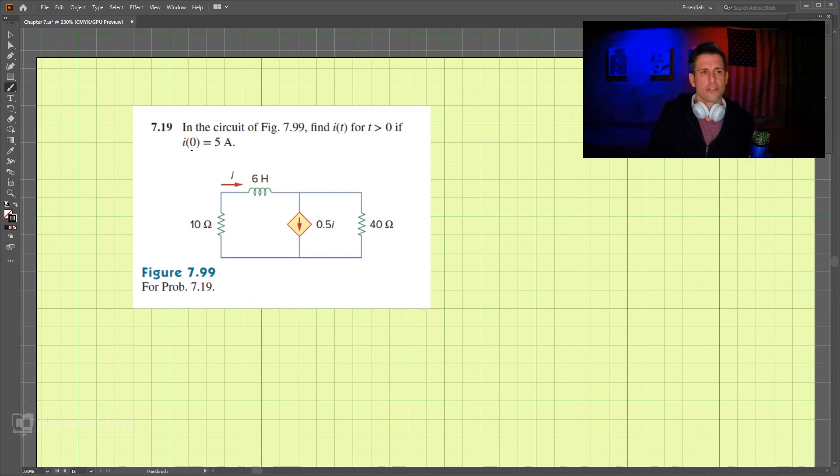So what we'll start here by looking at the currents. We have I here, and we have this dependent current source which is 0.5I, or one half of what this is, which then means that this current must be 0.5I, because this current coming in must equal this plus this.